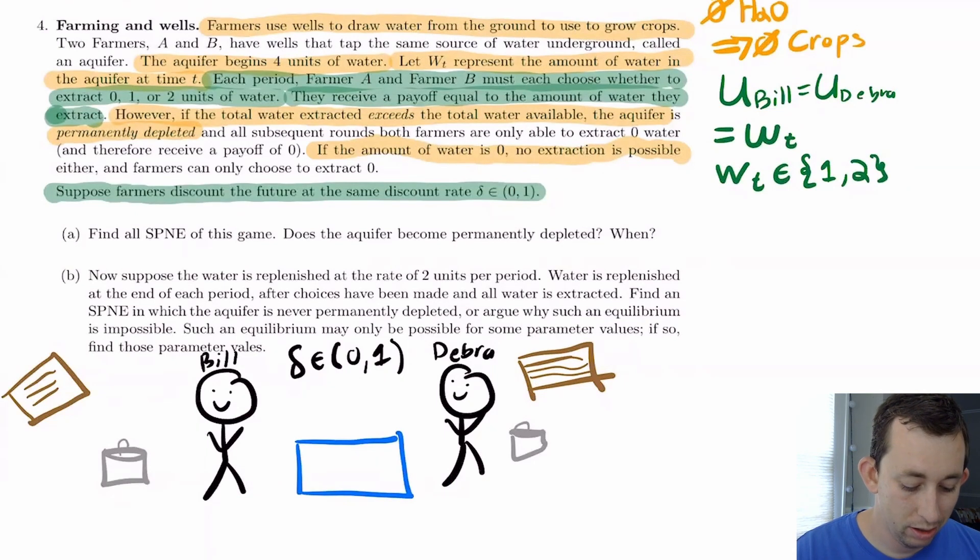Each period farmer A and farmer B, Bill and Debra, must choose how much to take out of this aquifer. They can choose zero, one or two buckets or units of water. Notice that because we've already talked in this setup that zero water means zero crops, this zero choice isn't really a choice. It's sort of maybe just a function of whether or not there's water in the well. Because otherwise, you would not choose to draw zero units because then you would grow zero crops. They receive a payoff equal to the amount of water they extract. Okay, so the utility function for Bill and Debra is just WT, where really their choice is between one or two, because zero is not really a choice.